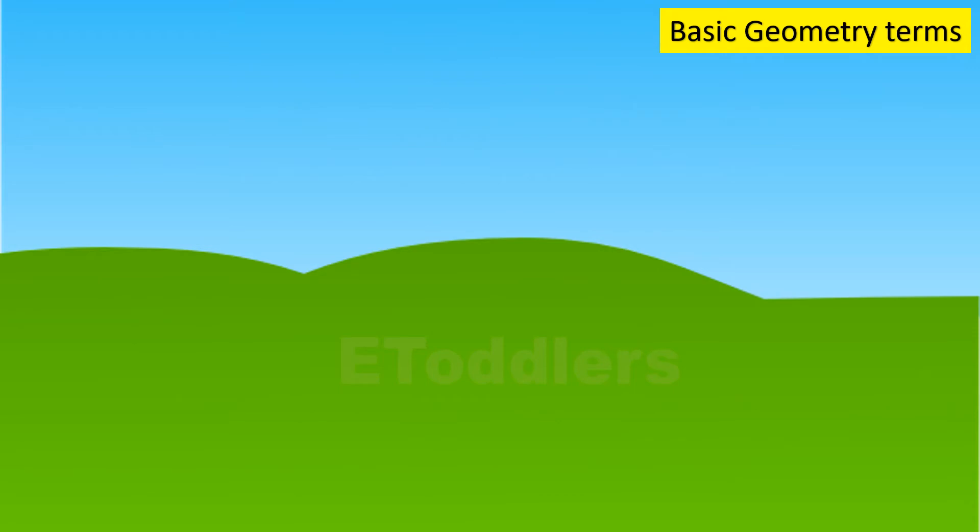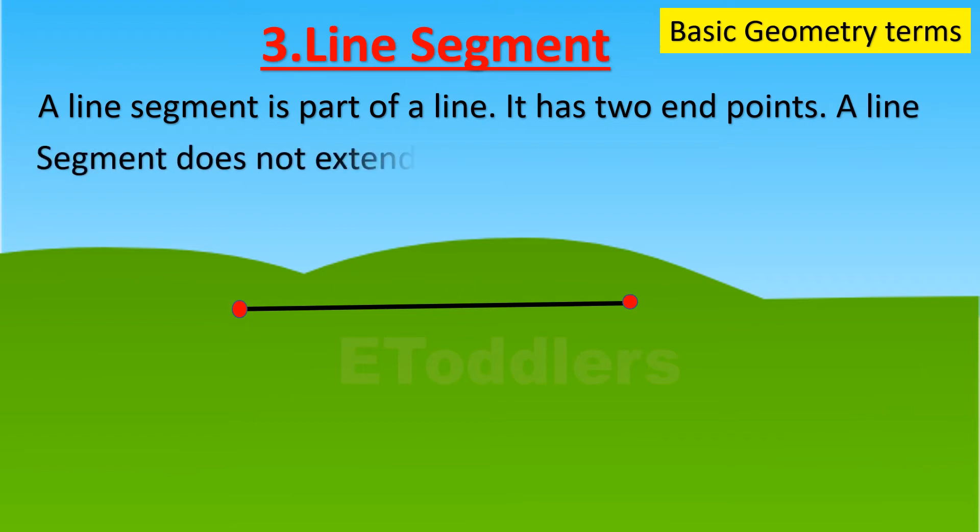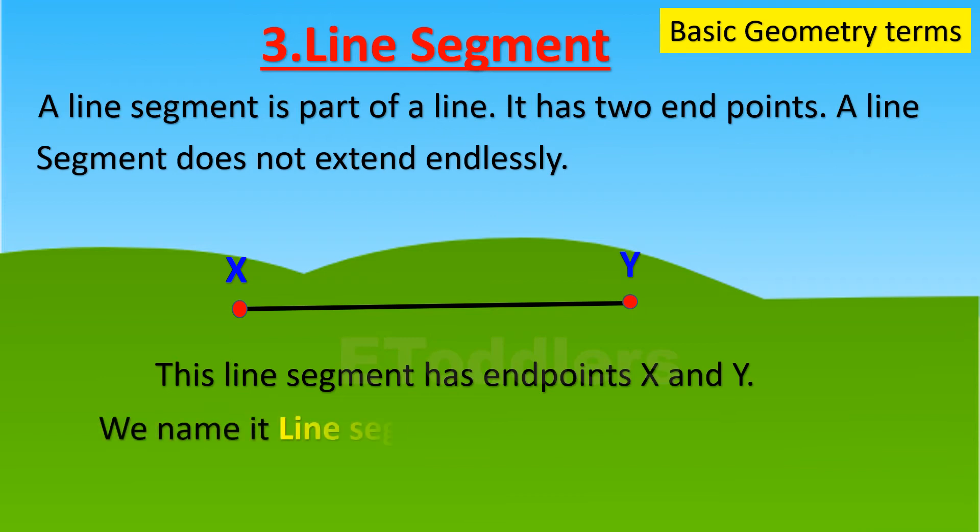The third term is line segment. A line segment is part of a line. It has two endpoints. A line segment does not extend endlessly; it has a specific length. This line segment has endpoints X and Y. We name it line segment XY or line segment YX.